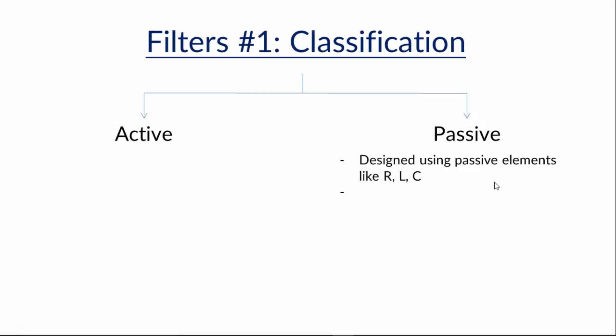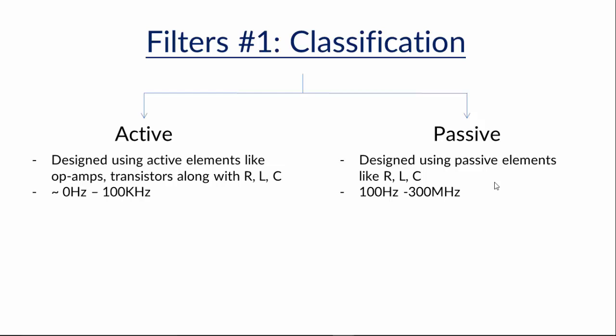But active filters are made using active components like op-amps and transistors along with passive components. Passive filters are most responsive to frequencies between 100Hz and 300MHz. Active filters can handle very low frequencies but they become unreliable after around 100kHz.